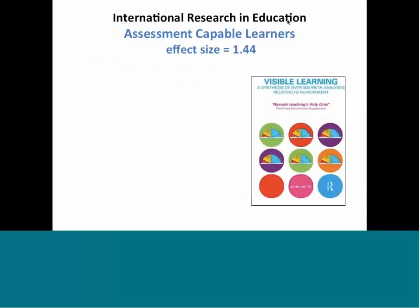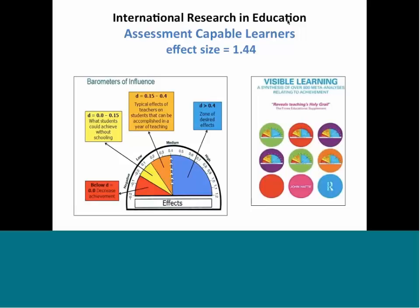Students that are able to do that have the initial elements to be what John Hattie described as an assessment-capable learner. This is number one in that top ten of effects and impact — an assessment-capable learner. According to his research, an effect size of 1.44 is more than tripling the rate of learning in one academic year. These students with this type of clarity are able to answer essentially three questions: Where am I going? How am I going? And where do I go next?